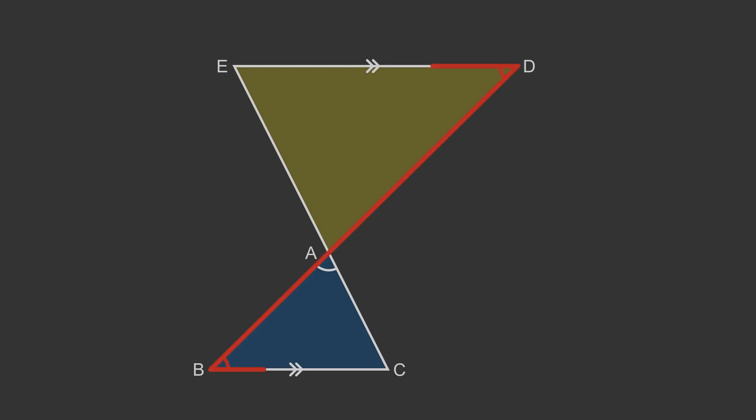The angles at B and D are alternate angles. They form a characteristic Z shape. Alternate angles are equal, so angles B and D are equal. Angles C and E are also alternate angles, though this time the Z shape is reversed. So angles C and E are equal. The triangles have two equal angles, so again they are similar by the AA rule.